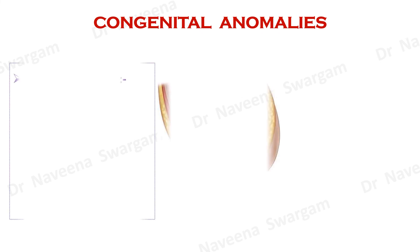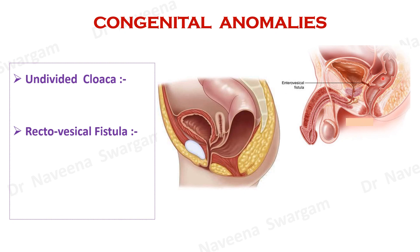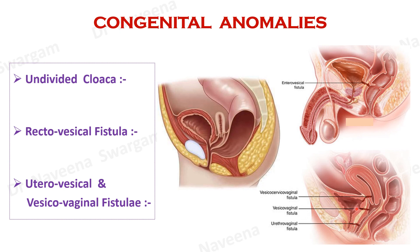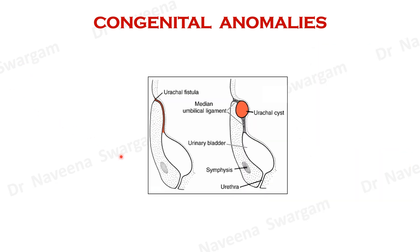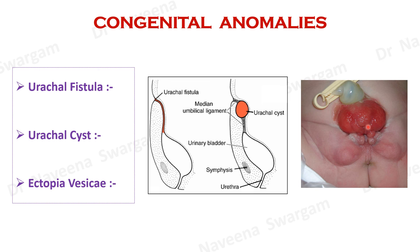Let's see a few congenital anomalies of the urinary bladder. Failure of fusion of urorectal septum with cloacal membrane leads to undivided cloaca, where the cloacal duct remains patent with imperforate anus, so that urogenital and alimentary systems open to the exterior through a common orifice. In males, abnormal communication may develop between the rectum and urinary bladder known as rectovesical fistula. Similarly, in females, uterovesical and vesicovaginal fistulae may develop. Persistence of the urachus after birth connecting the apex of the urinary bladder to the umbilicus forms a urachal fistula, which may lead to leakage of urine at the umbilicus. A portion of the urachus may be patent within the median umbilical ligament, forming a urachal cyst. Failure of formation of the infraumbilical part of the anterior abdominal wall leads to exposure of the urinary bladder, known as ectopia vesicae.